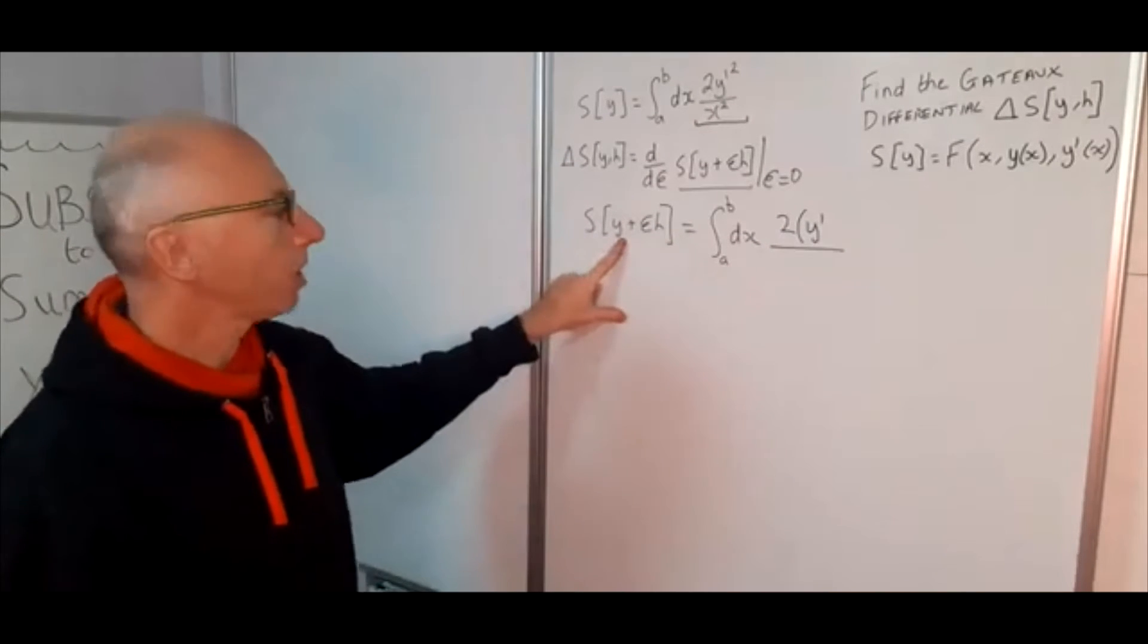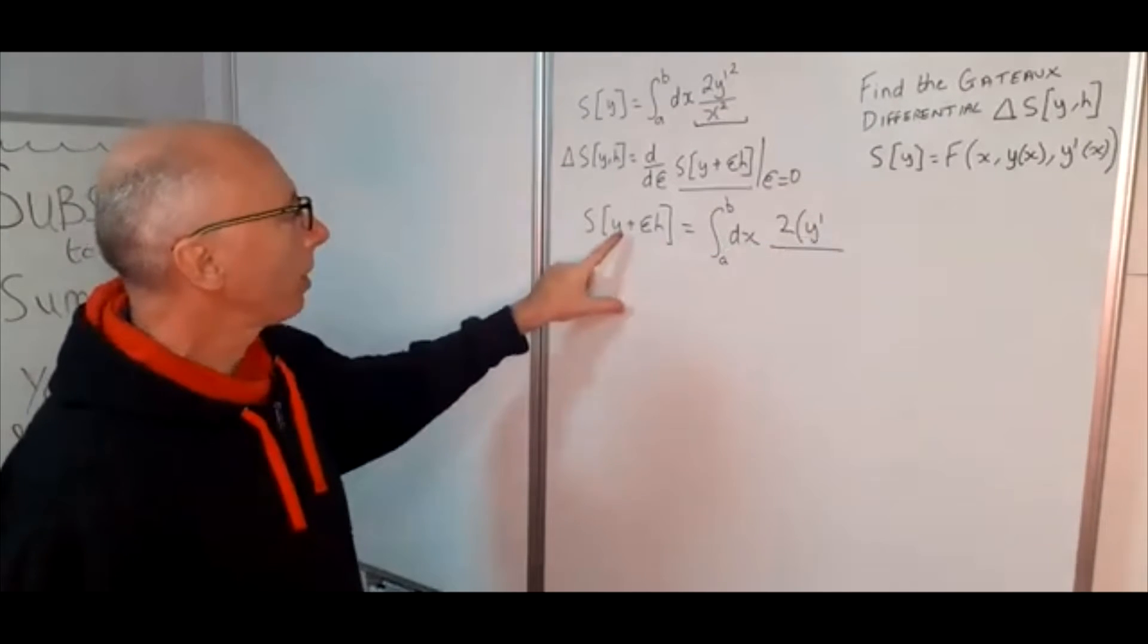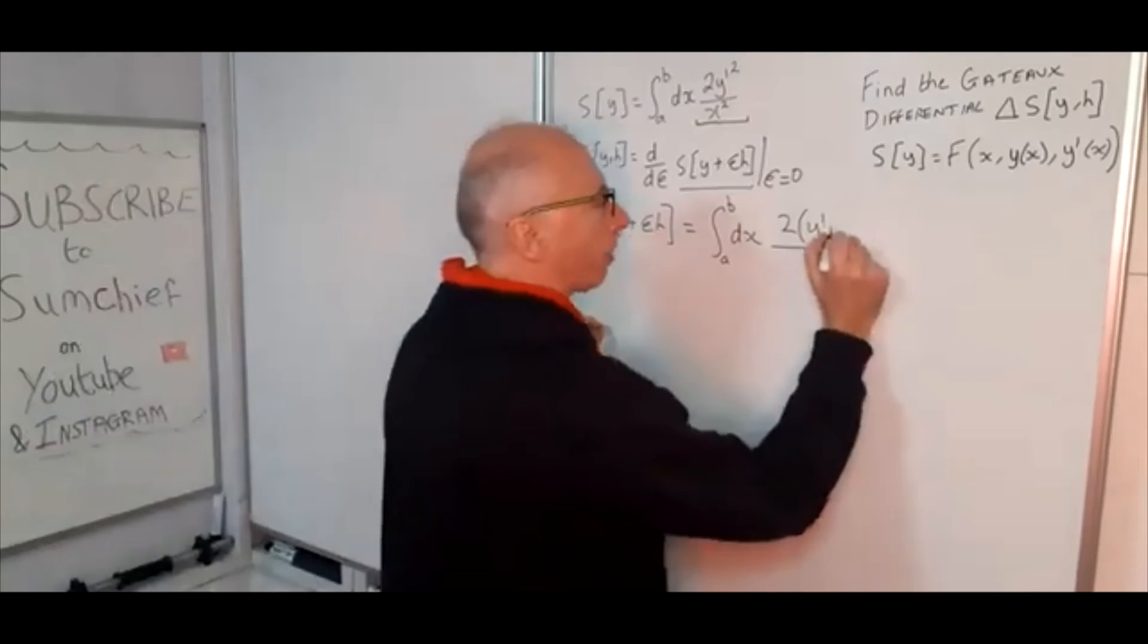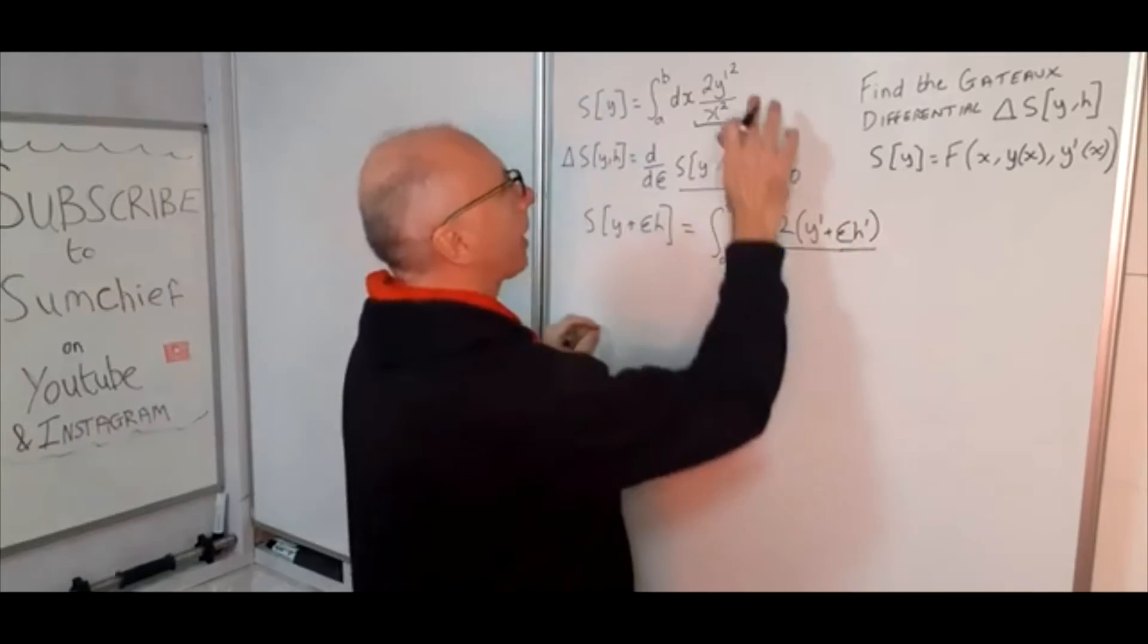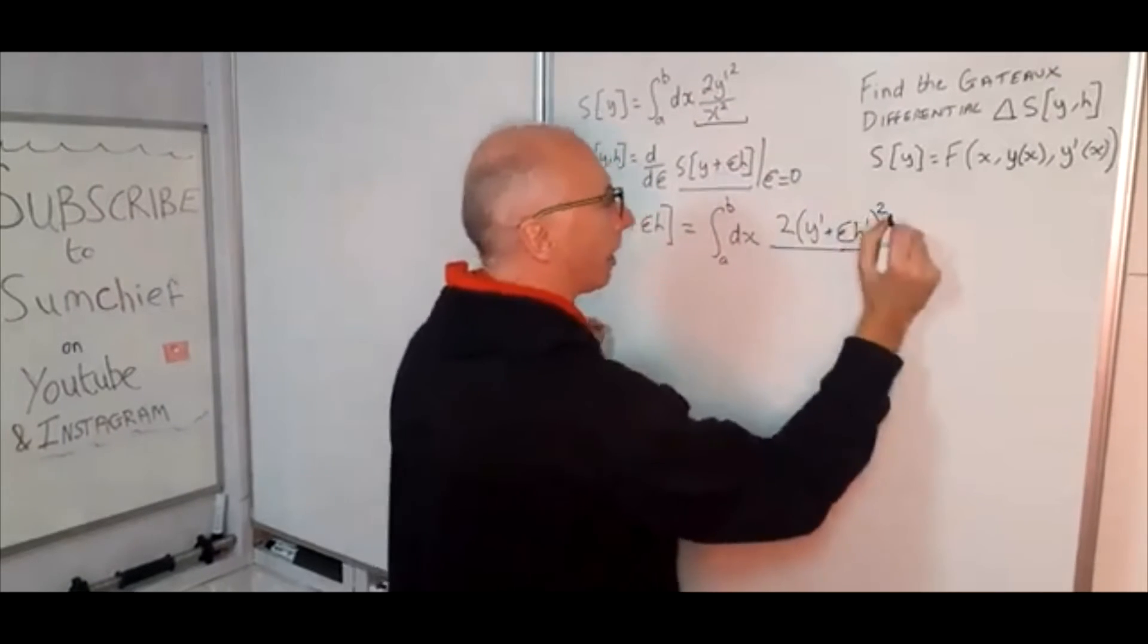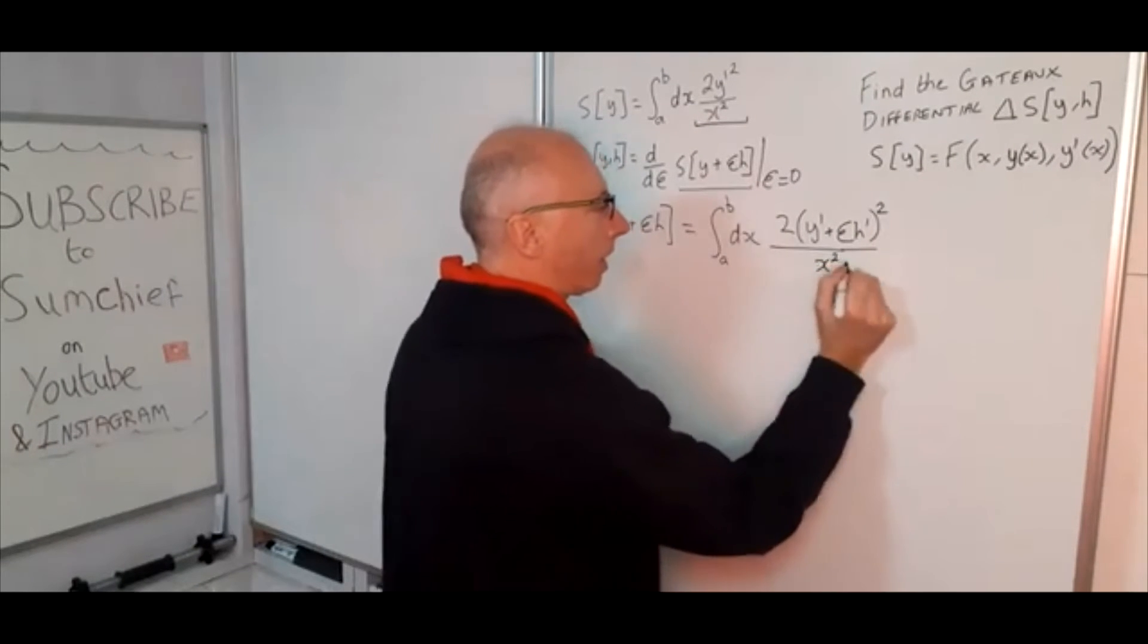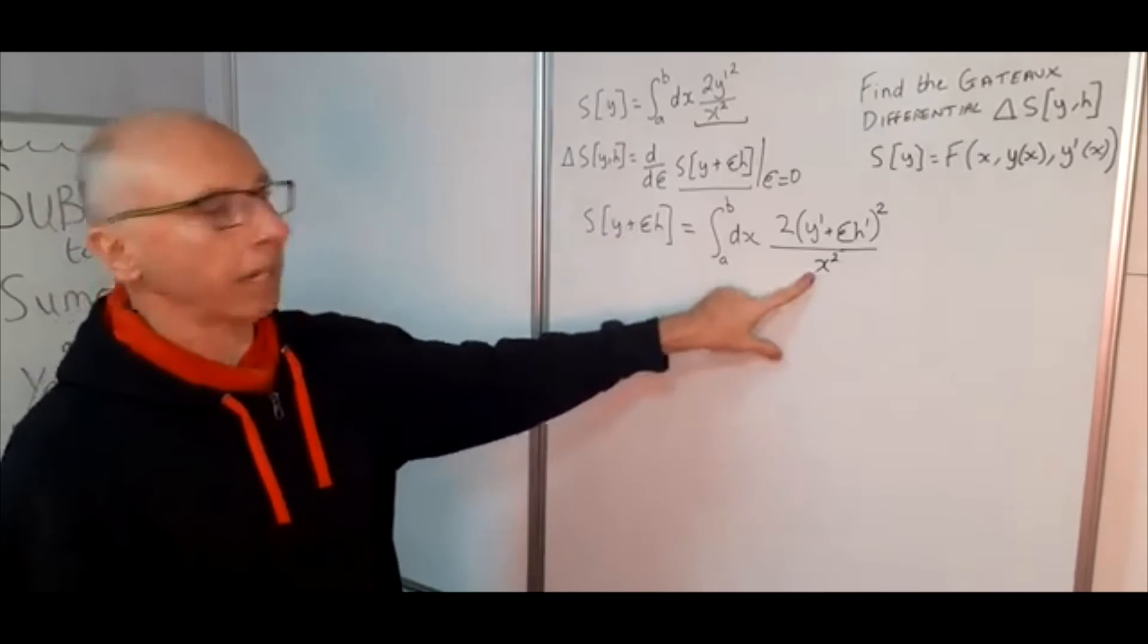Now even though this is only a y plus epsilon h, when it is a y prime we add y prime plus epsilon h prime. So we need to put the epsilon h prime in there and again this is still squared and then we divide that by x squared. So x squared is independent of the y so we can just leave that as it is.